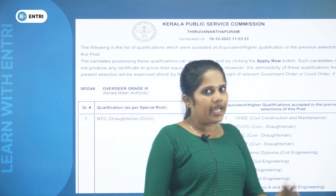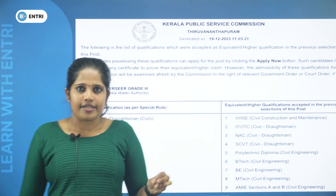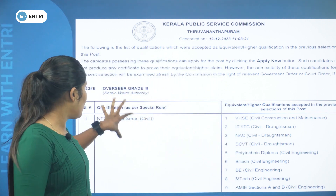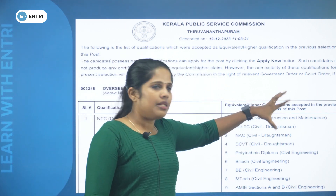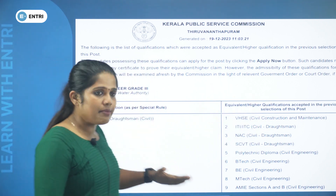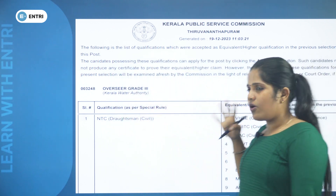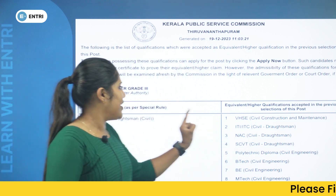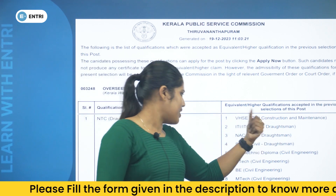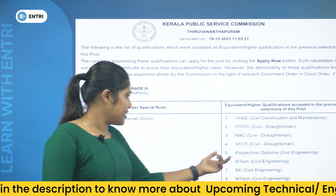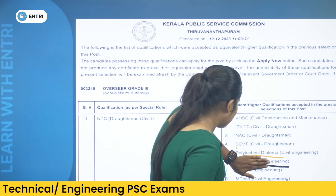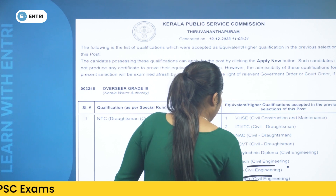There are a few qualification instances. For 3rd grade, if you have a diploma or equivalent, there is one confusion I will clarify. Equal or higher qualifications are acceptable. Qualifications include: VHSC Civil Construction and Maintenance, ITA or ITC Civil Draftsman, NAC Civil Draftsman, SCVT Civil Draftsman, Polytechnic Diploma in Civil Engineering, B.Tech Civil Engineering, and also ABBE and M.Tech Civil Engineering.